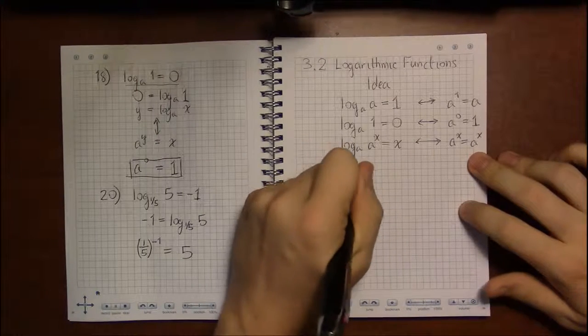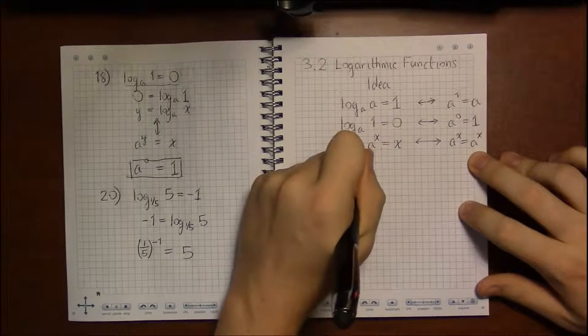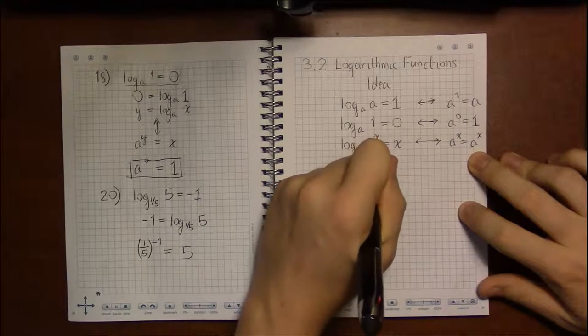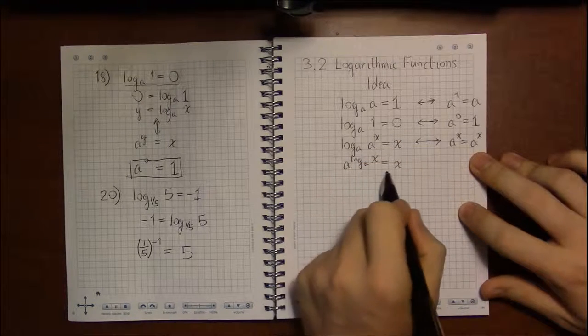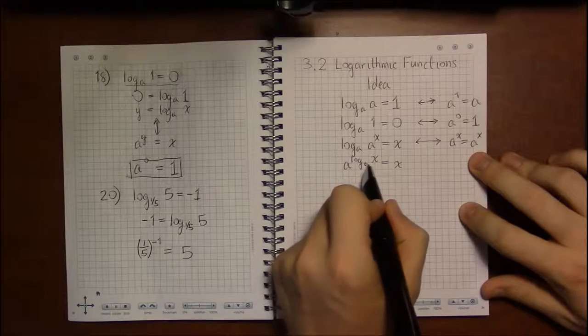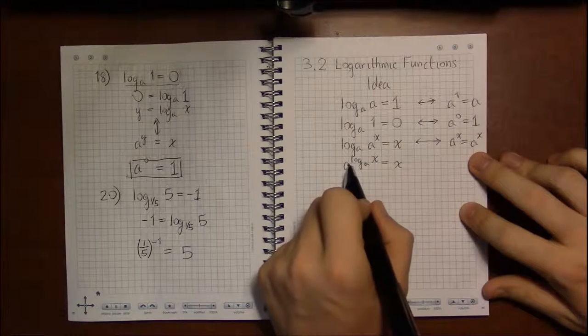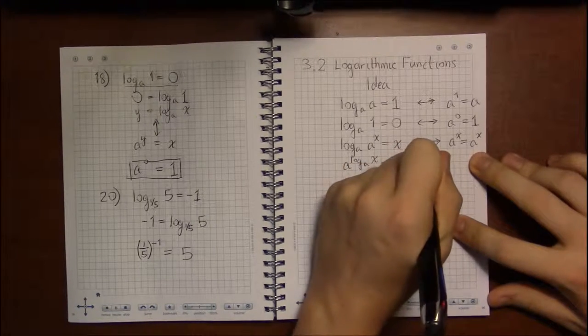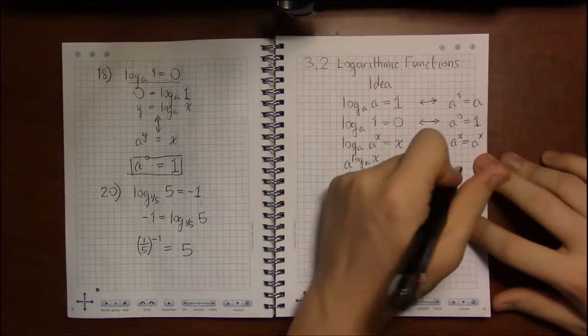And the other thing that is rather trivial, that a to the log base a of x is equal to x. Now this is already in exponential form. It's a to some weird power. Granted, it's really weird, but it's just a power equals x.